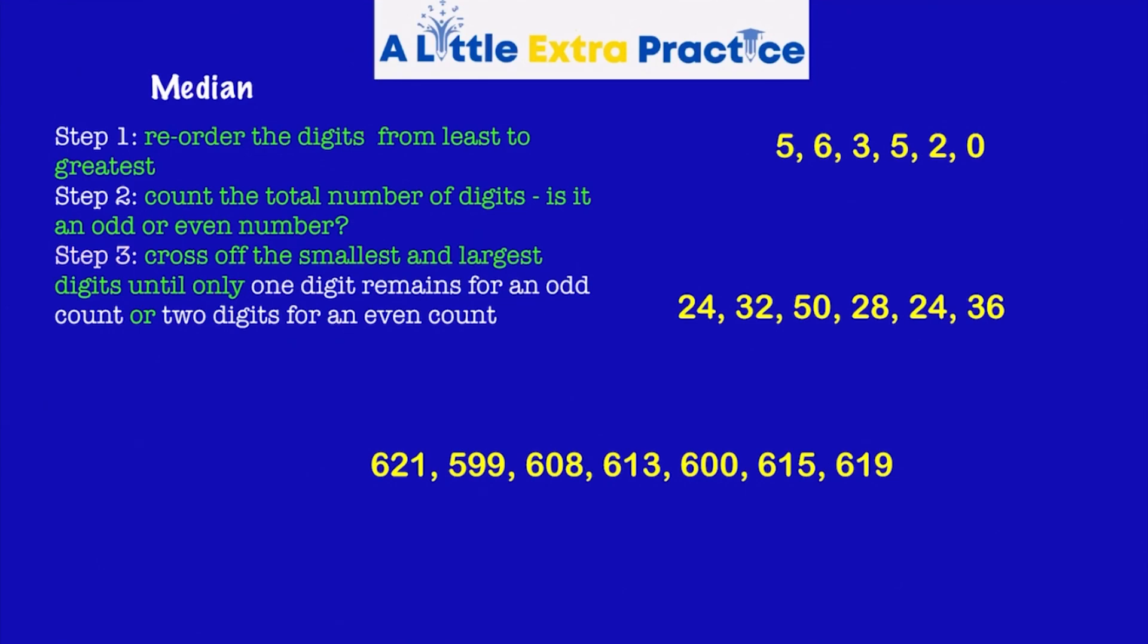Okay, let's see how you did. The first set, zero, two, three, two fives, and one six. Okay. One, two, three, four, five, six. There is an even set. So I need to find two digits. Okay, the last two digits. My final two numbers are three and five. What's halfway between three and five? Four. Okay. So my median is four.